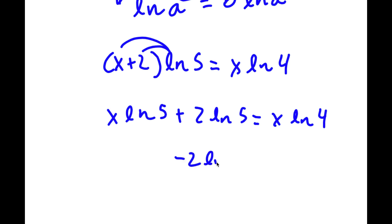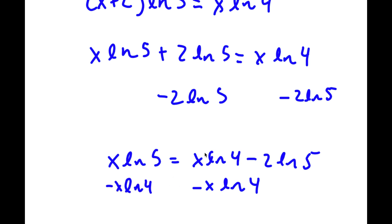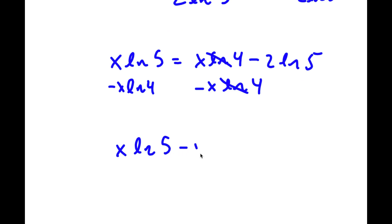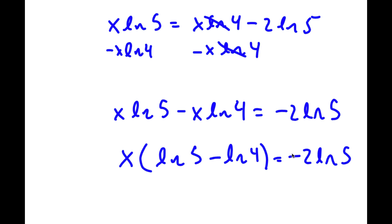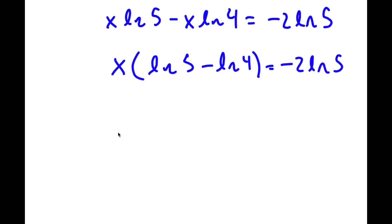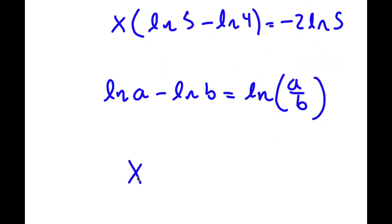Now I'm going to subtract 2 ln 5 on both sides, so I have x times ln 5 equals x times ln 4 minus 2 times ln 5. Then subtracting x times ln 4 on both sides, I get x times ln 5 minus x times ln 4 equals negative 2 times ln 5. Factoring out x gives x times quantity ln 5 minus ln 4, equals negative 2 times ln 5. Now, ln 5 minus ln 4 can be rewritten as ln of 5 over 4.